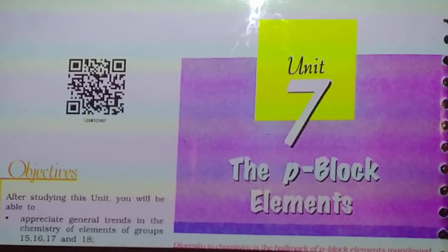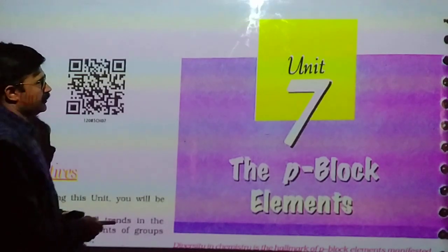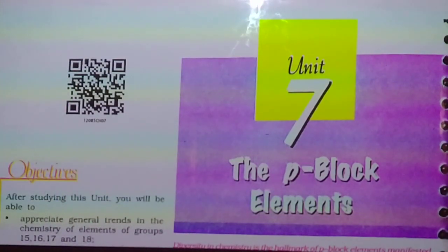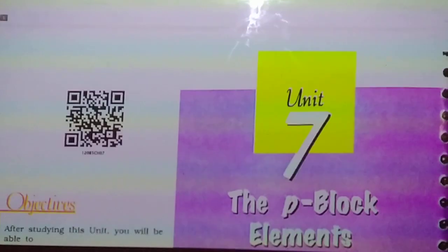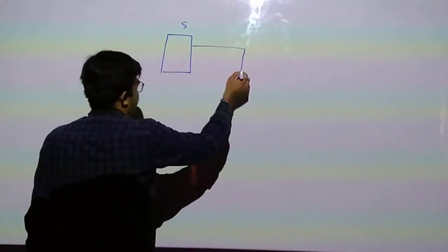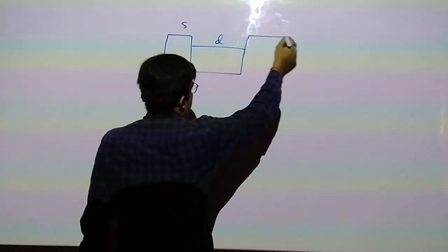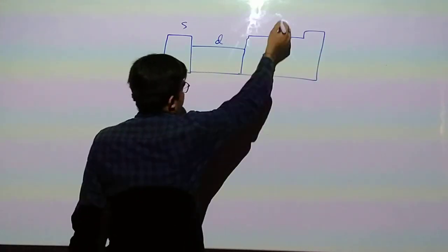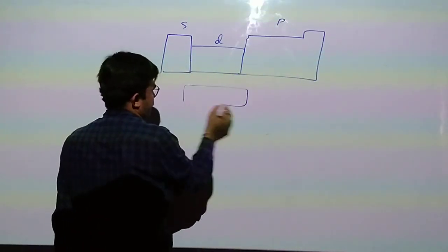Dear students, today we are going to start our new chapter, p-block elements. In our modern periodic table, groups 13 to 18, this is s-block, this one d-block, this one p-block, and here is the f-block.